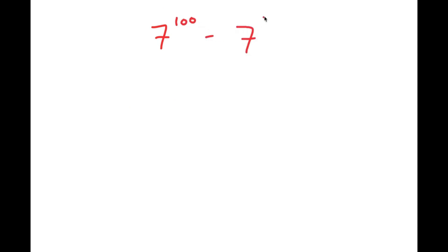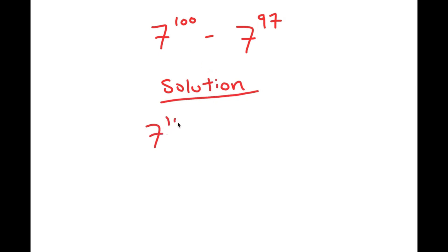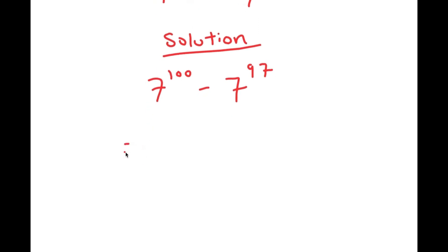In this video, I'm going to be solving the problem 7 to the power of 100 minus 7 to the power of 97. For my solution, I'm going to rewrite the problem, and the first thing I'm going to do is rewrite 100 as 97 plus 3. So I get 7 to the power of 97 plus 3 minus 7 to the power of 97.